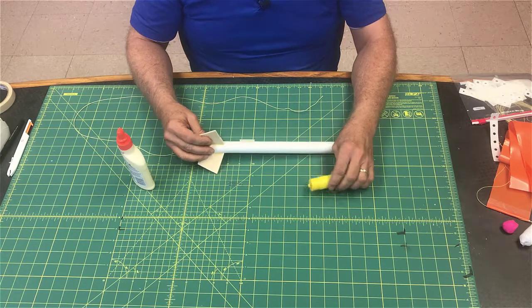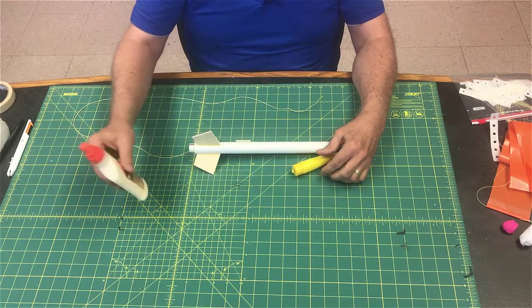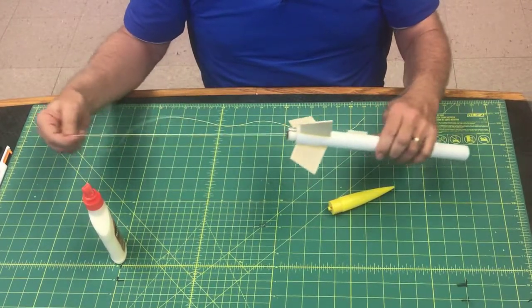To do that, you're going to need your rocket, your nose cone, you need a paper clip, and you're going to need a little bit of this wood glue too.